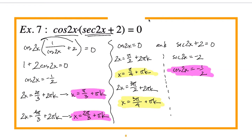Comparing the two methods: the right-hand method (keeping it factored) is more complete. When we distributed in Method 1, we lost the solutions that came from cos(2x) = 0. So if it's already factored, the safest bet is to set those two factors equal to zero right away so you don't lose any solutions.